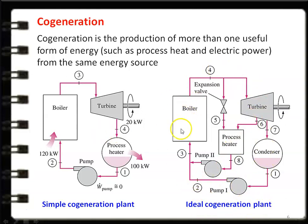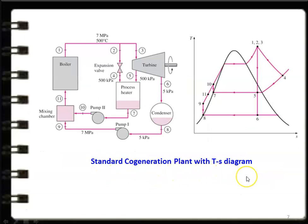The ideal cogeneration plant is the modified version of the simple cogeneration plant, offering flexible steam distribution. Pumps 1 and 2 take power from the steam turbine, and the remaining power is available as external work. The standard cogeneration plant has an additional component — a mixing chamber — along with a boiler, steam turbine, expansion valve, process heater, condenser, pump 1, and pump 2. The outputs from pump 1 and pump 2 are mixed in the mixing chamber, and the water at condition 11 is circulated back to the boiler.